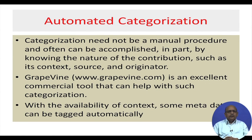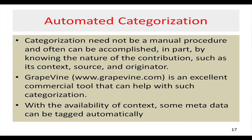In the knowledge management architecture, provide for automated categorization — make sure it is not done manually but with automated systems, so that whatever is contributed is codified and put into context, with information about the context in which it was applied and the source. Once codified and classified, the KM system should handle this automatically. One example is a tool called Grapevine, which helps with this kind of categorization and automation of context. If context is available, you can even track certain metadata to it.